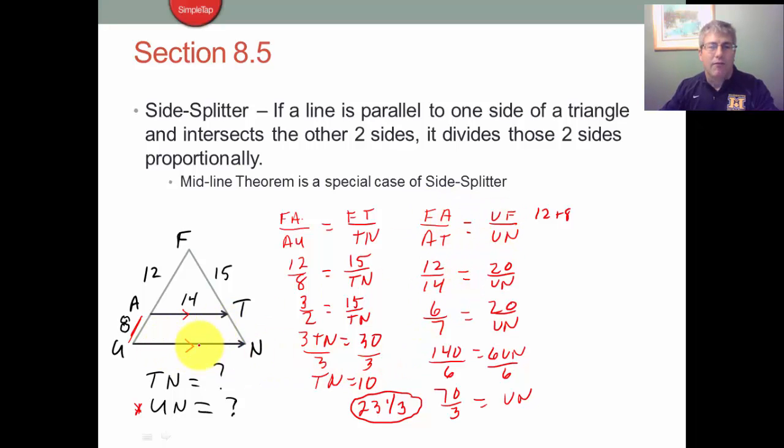So we're going to solve for UN differently than we would solve using the side splitter. The side splitter is the first part, but this second part finding UN was not the side splitter.